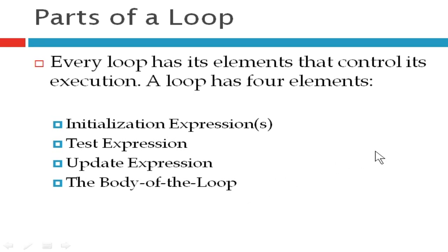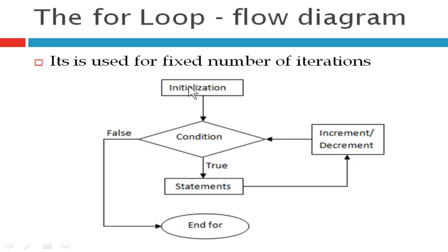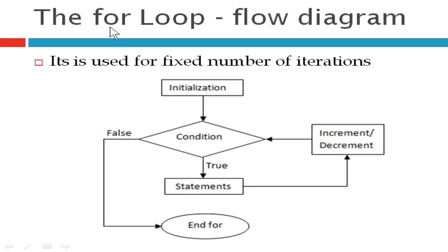We are going to see this as a flow diagram. For loop is used for a fixed number of iterations — if you know how many times you are going to execute the loop. For example, if the initial value is 1 and the final value is 10, that means you know it should execute 10 times. So it is called a fixed number of iterations, and in that case you can use for loop.